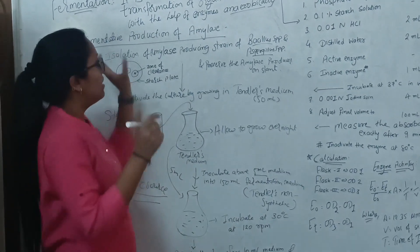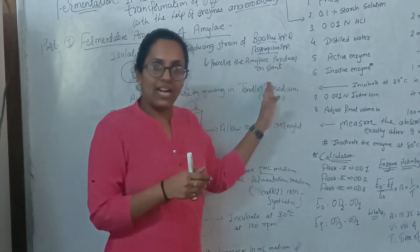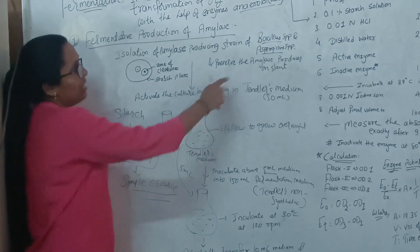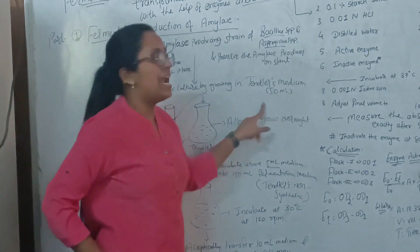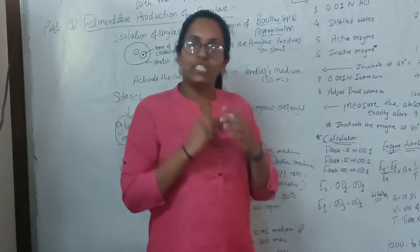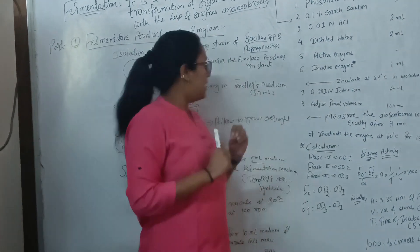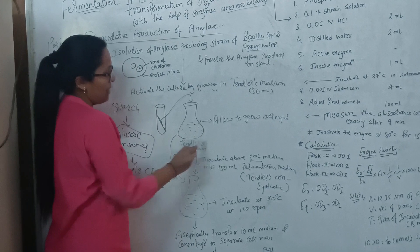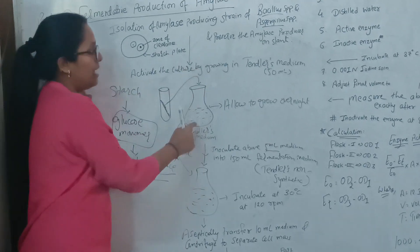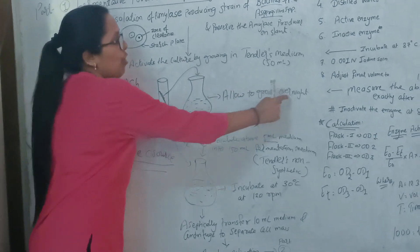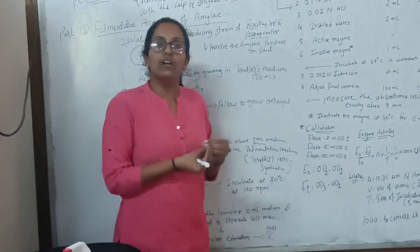Once you have screened these Bacillus and Aspergillus species, we need to preserve them on a slant. Once we have slants containing amylase-positive species, we need to activate the culture by growing them in tenderless medium. Tenderless medium contains starch in its composition as a carbon source. We need to transfer 50 ml of tenderless medium, then inoculate the isolated amylase-positive organism into this tenderless medium and allow it to grow overnight, so that we have multiplication of bacteria or fungal cells.